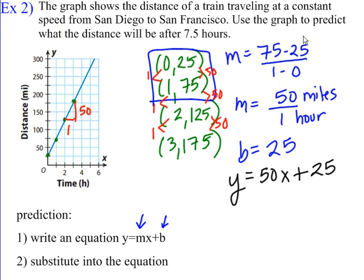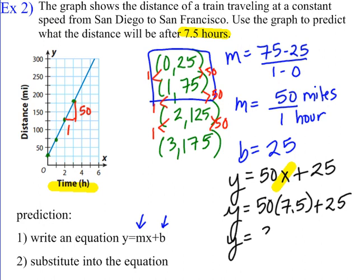And part 2 says substitute into the equation. Now we have to look at this. It says use the graph to predict what the distance will be after seven and a half hours. Now hours is x on the chart here. And the reason we're predicting is seven and a half is off the chart. So what we want to do is take that seven and a half, put it in place of the x, and solve. So y equals 50 times 7.5 plus 25. If we use our order of operations, 50 times 7.5 is 375. So we're going to add the 25 to that. And altogether, 375 plus 25 is 400. And the question is, what's the distance to this 400? And we can see it here also on our graph, is miles.